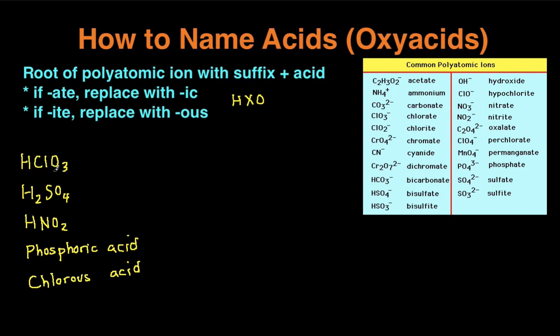So first example, HClO3. First step is to separate the acid into two parts, the H part, and then the polyatomic ion part. Then, I've included a list of the most common polyatomic ions here. Double check if you need to memorize this list, or if your teacher's going to provide it on the quiz or a test. But then once, we're going to find the polyatomic ion, ClO3, which is chlorate.